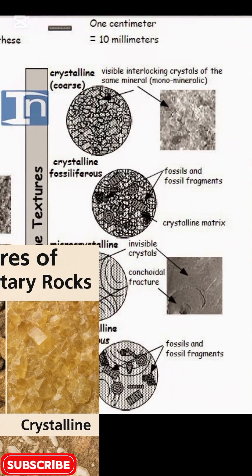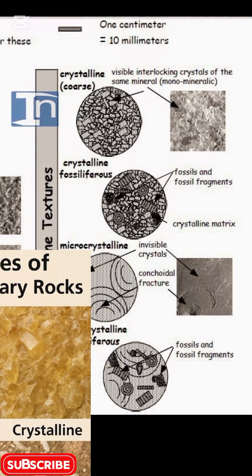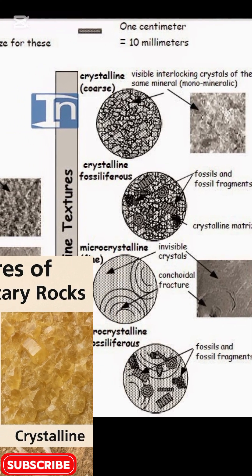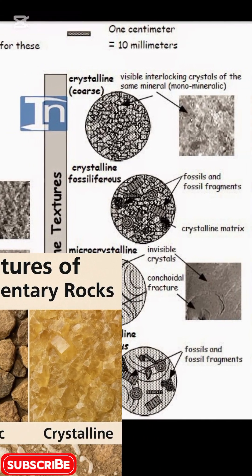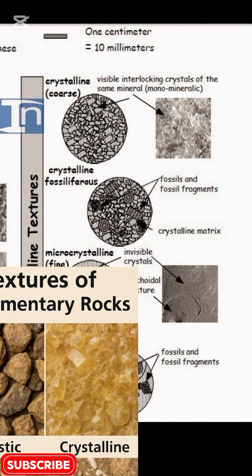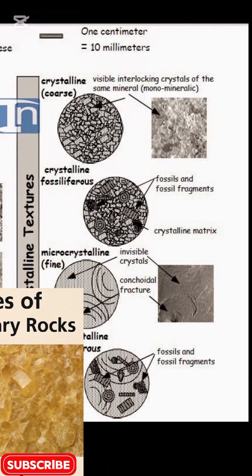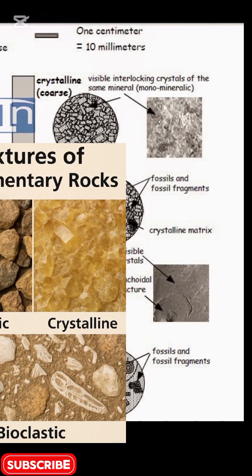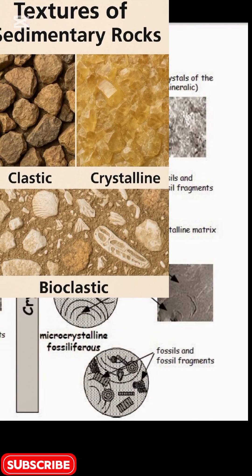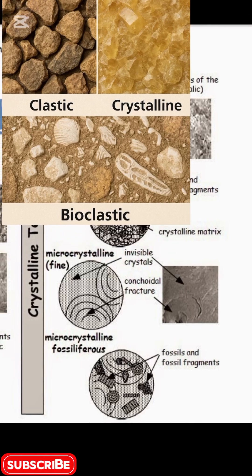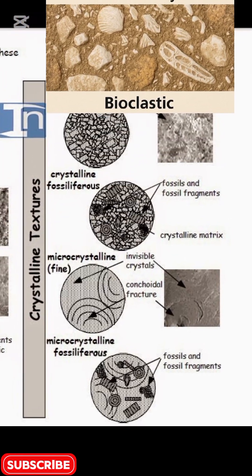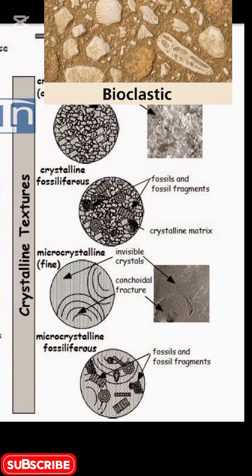Crystalline texture is the second type, formed by interlocking mineral crystals of chemical or biochemical origin. Examples include salt and microcrystalline chert. The third texture is bioclastic, which contains fossil fragments. Examples include phosphorous limestone and coquina.